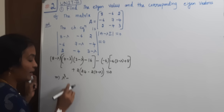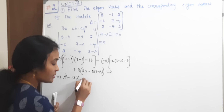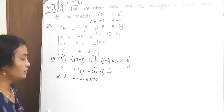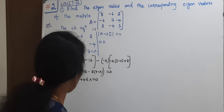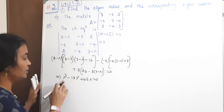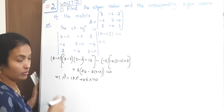After solving this I will get one equation in terms of lambda: lambda cubed minus 18 lambda squared plus 45 lambda is equal to 0. Then by using the remainder theorem, putting lambda equal to 3: 3 squared gives us a check. And lambda equal to 0 is also satisfied.